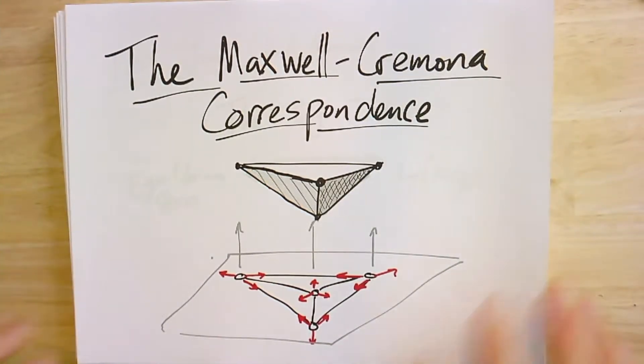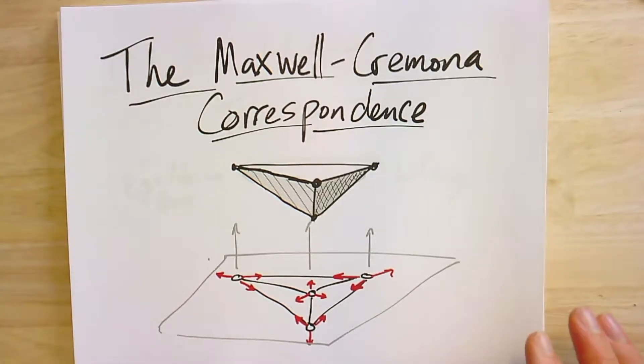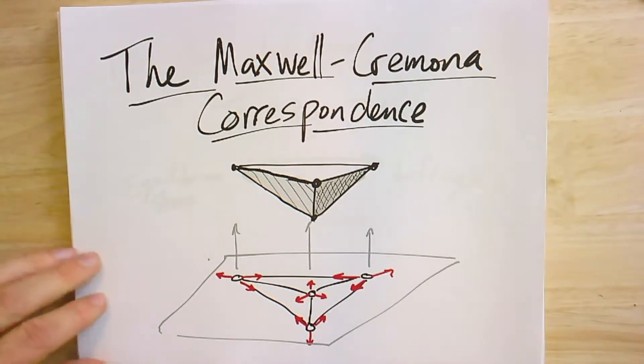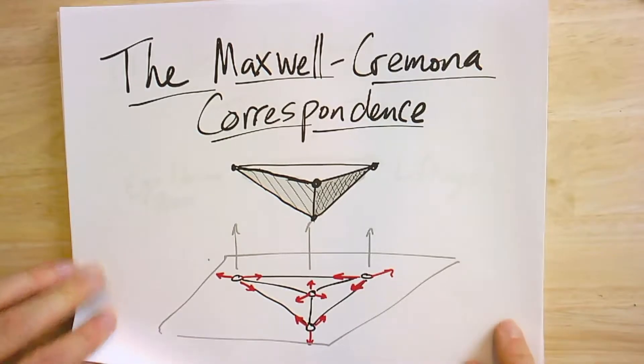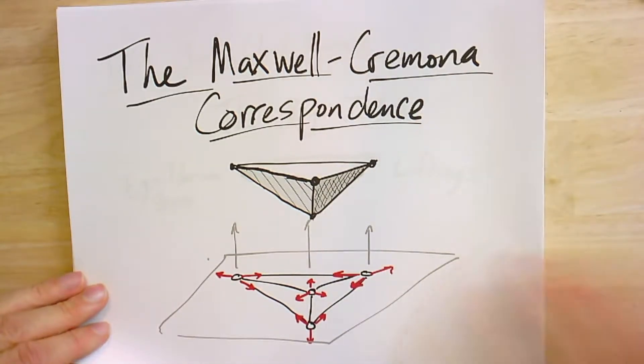The Maxwell-Cremona correspondence, one of the coolest classic results I know, in a way that this simple idea encodes an entire theory of discrete calculus. And we're going to get to see only a little bit of it, but we'll see the result and also its proof.